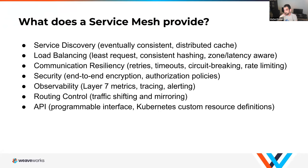Another thing the service mesh provides is load balancing. One interesting capability is consistent hashing, which enables session affinity. If your app is stateful and a client needs sequential requests routed to the same pod, consistent hashing achieves this. Service meshes also add least-requests load balancing on top of Kubernetes round-robin — forwarding new requests to the pod processing the fewest active requests. There are also zone and latency-aware load balancing options.